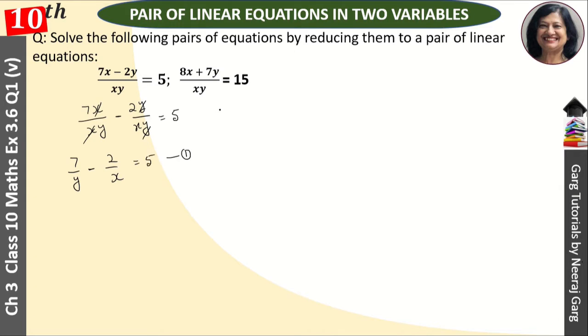Now, second equation we will do this. This will be 8x upon xy plus 7y upon xy, that is equal to 15. This y will cancel, this x will cancel. Our equation is 8 upon y plus 7 upon x is equal to 15. This is our second equation.